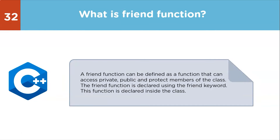Next question: what is a friend function? A friend function is a function that can access private, public, and protected members of a class. It is declared using the friend keyword and is declared inside the class.